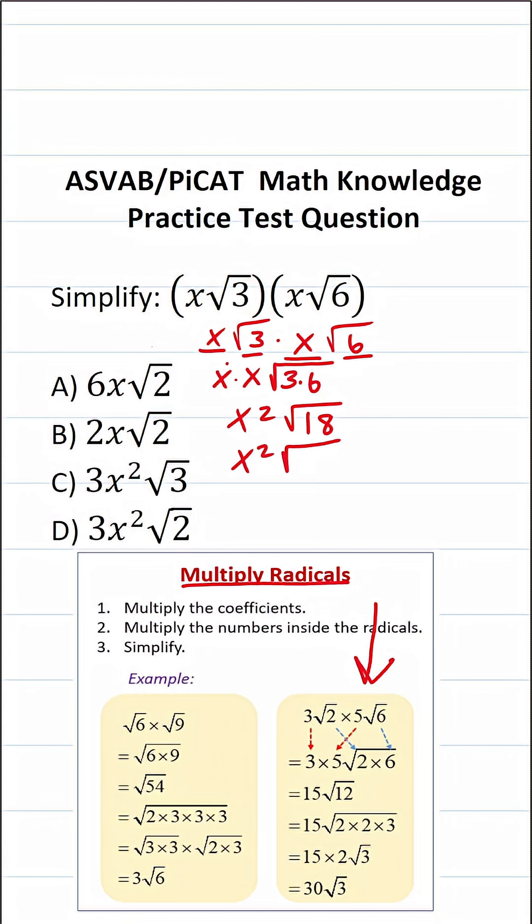What is 18? 18 is the same thing as nine times two. So this becomes x squared times the square root of nine times the square root of two.